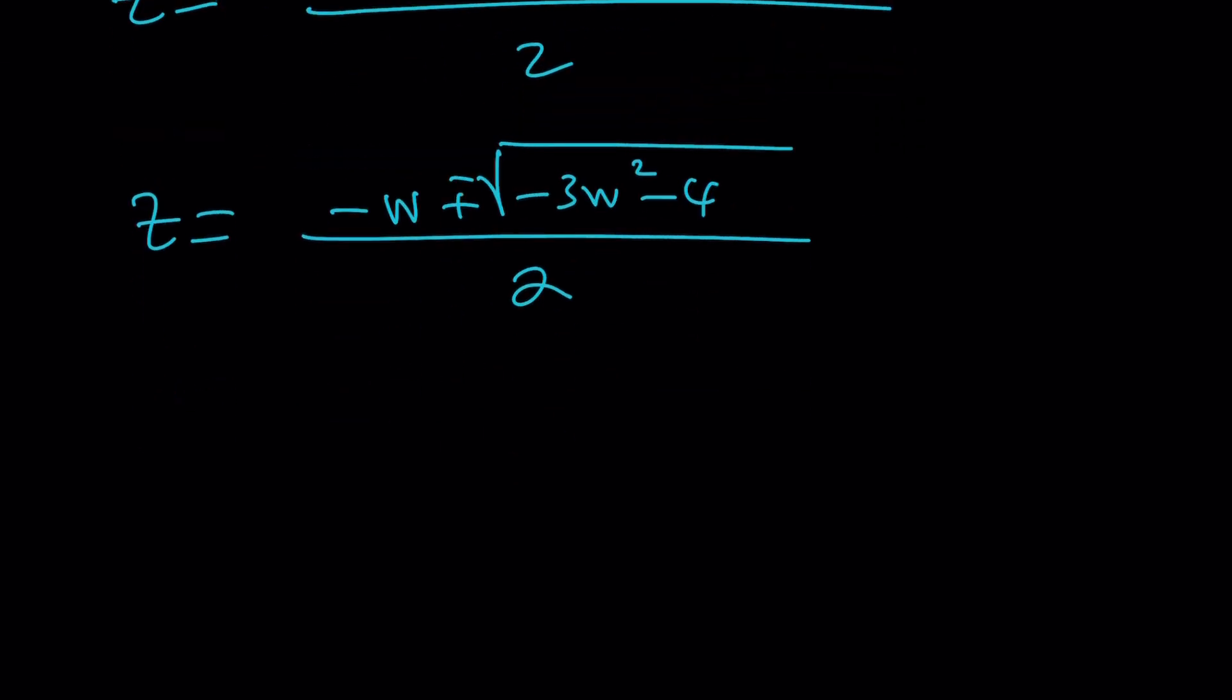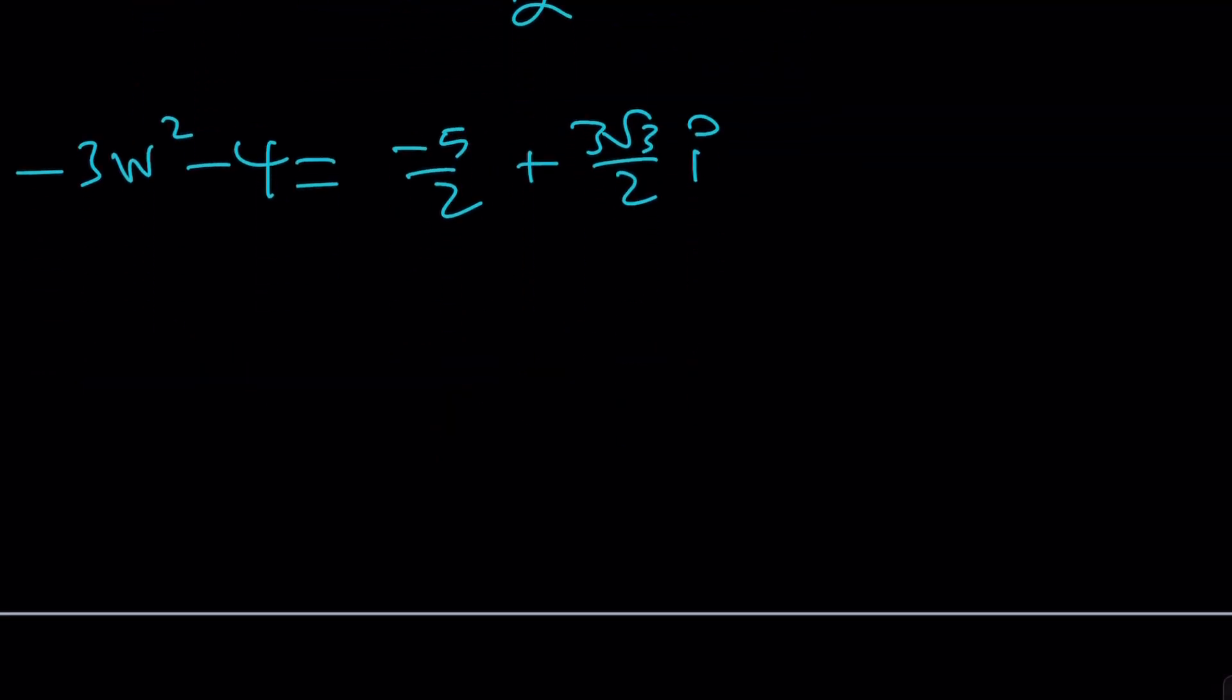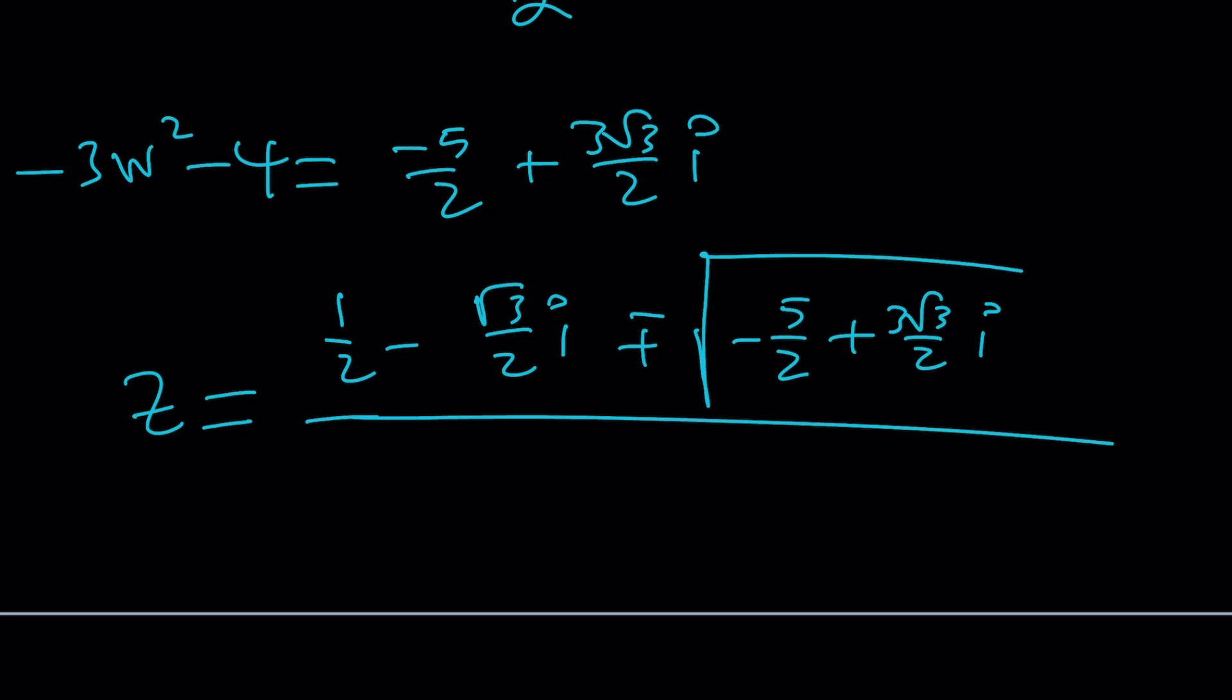Great. What am I going to do with this? Well, let's evaluate -3w² - 4. Can I just give it to you? It's going to become -5/2 + √3/2 i. If you don't believe that, go ahead and do it for yourself. z becomes 1/2 - √3/2 i plus minus the square root of (-5/2 + 3√3/2 i). What is the square root of this weird number? There are two square roots. I don't know, but you can definitely evaluate it. It shouldn't be too hard, it should be nice.